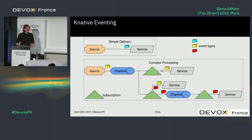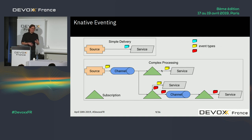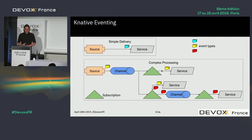The latest release of Knative eventing is 0.5, released a few days ago. It introduced new abstractions: the broker and the trigger. The broker is a bucket for all events — all events can be collected there — and the trigger allows you to define filters to select which events shall be delivered to specific services.